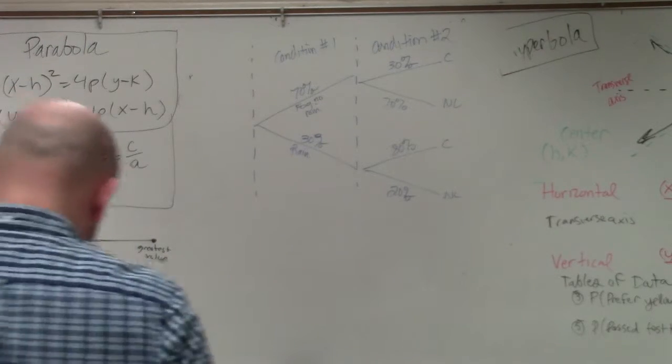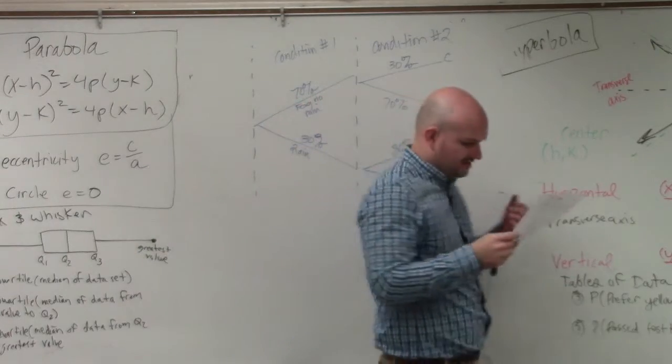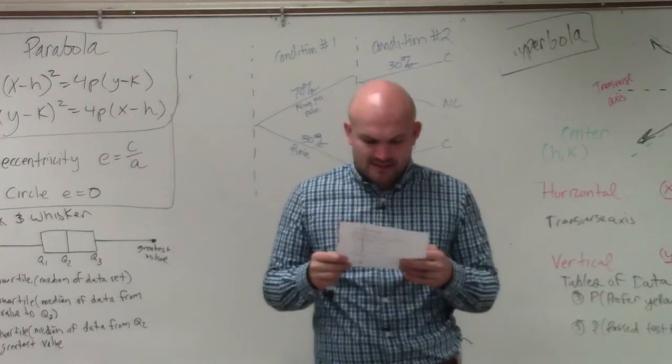So the first answer, first problem is saying, find the probability that there will be fog and the game will be canceled.